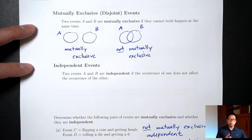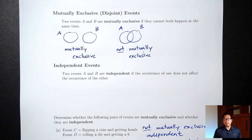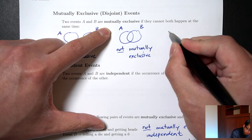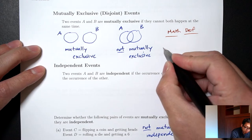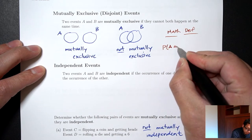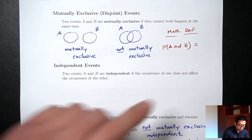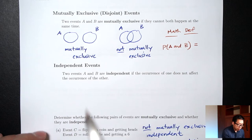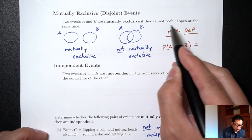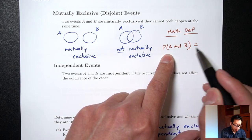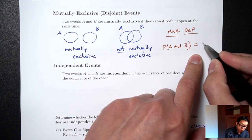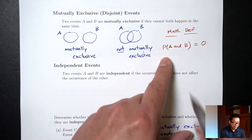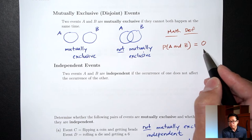We just talked about mutually exclusive and independent using words. Both of these ideas have a math definition. For mutually exclusive, the math definition involves the probability of A and B. The word 'and' means A and B at the same time. If mutually exclusive means they cannot both happen at the same time, then the probability of A and B both happening at the same time is zero — meaning it's never going to happen.